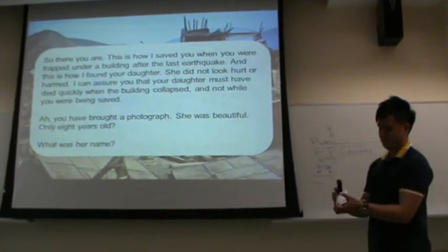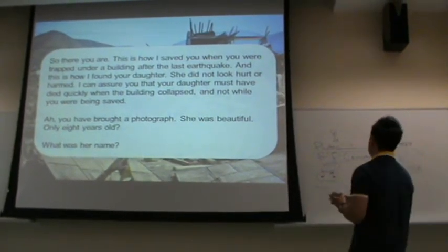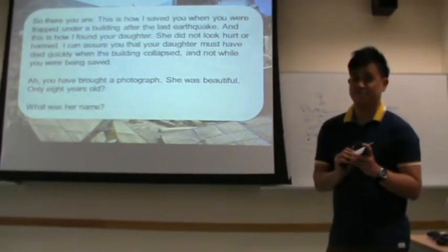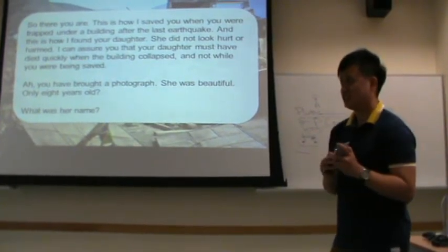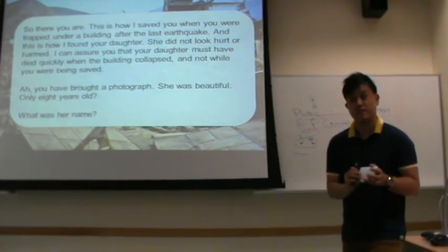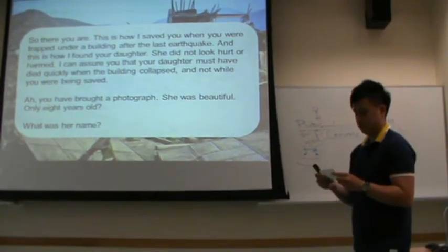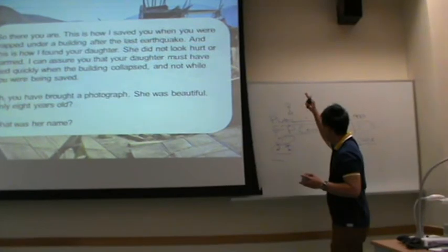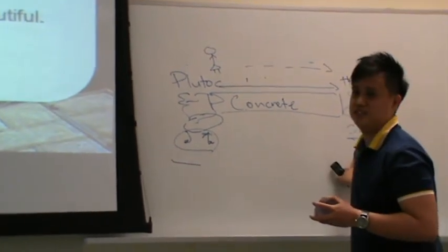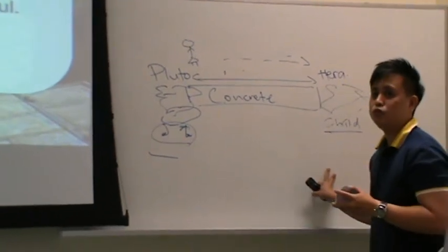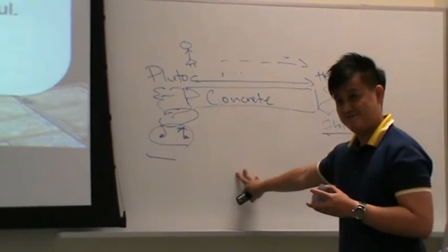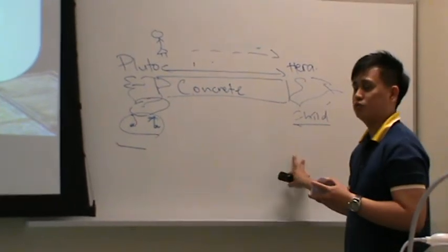Previously we established this is a first-person narrator, recounting what happened. And now in this passage — 'so there you are, this is how I saved you' — we see the I's and you's again. This gives us a great hint that the recount has ended and the narrator is talking to the person again. We have various characters established. Do you think there's a relationship between the narrator and the survivor?